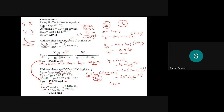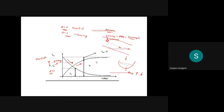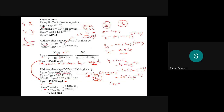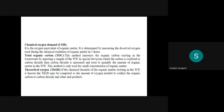Good morning everyone. In the previous class we were discussing BOD problems — what is BOD exerted and what is BOD remaining. Those two aspects we already studied with respect to the figure, and we solved two major problems. We covered the relationship between BOD remaining and BOD exerted, and how to make temperature corrections for BOD remaining and BOD exerted when the temperature is other than 20 degrees centigrade.